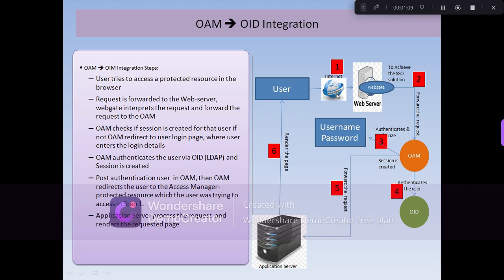OAM checks whether a session has been created for the user. If not, it redirects to the login page where the user enters their username and password. The credentials are validated and authenticated against OID, a session is created in OAM, and the request is then forwarded to the application server, which processes it and renders the page to the user. This is the typical OAM and OID integration flow.